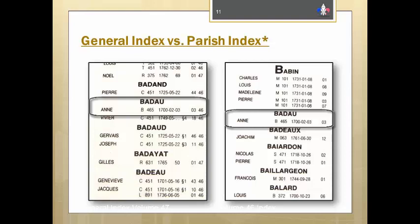Next comes the date of the baptism, which took place in 1700, the second month, February, the third day. The next 03 refers to Anne's position in the baptism record, which we'll look at in an upcoming slide. The general index on the left has one extra number, which is the number of the volume in which you'll find the record — volume 46. We'll take a more in-depth look at Anne's record shortly.